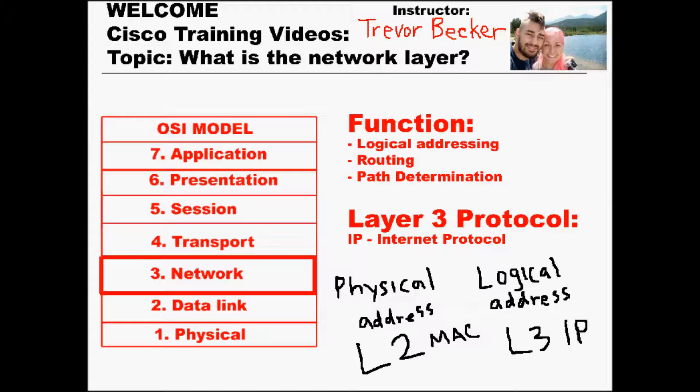However, if two hosts are in different networks, then a layer 3 device, such as a router, is required so that it can perform IP routing and actually route those packets to the correct device on the other network. It is possible that there may be hundreds of devices in between the two hosts that are communicating on the network, so this is where the term path determination comes into play.